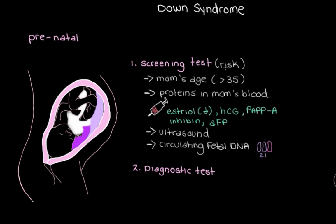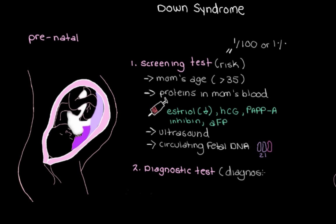To be clear, prenatal screening is not a way to diagnose Down syndrome — it's a way to get a prediction of what the risk is. For example, screening tests might determine that a mom has a 1 in 100 chance, or a 1% risk, of having a baby with Down syndrome — meaning a 99% chance the baby will not. Once parents are given this risk prediction, it's up to them to decide if they want an actual prenatal diagnostic test. With screening we only get an idea of risk, but with a diagnostic test we can diagnose Down syndrome with almost 100% certainty.